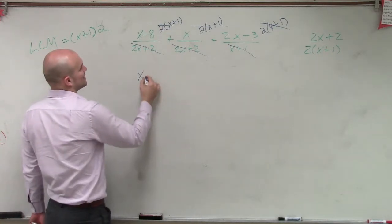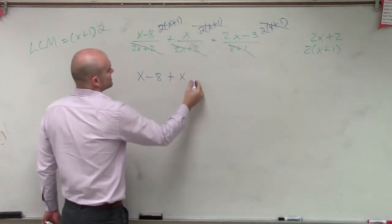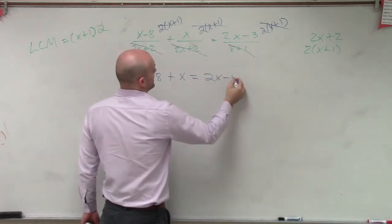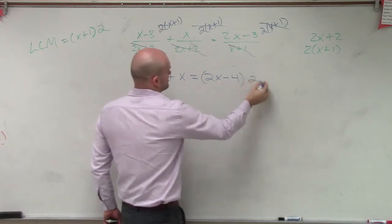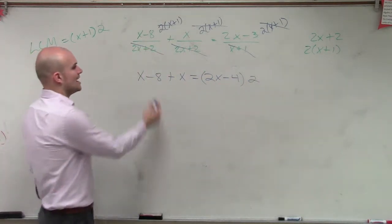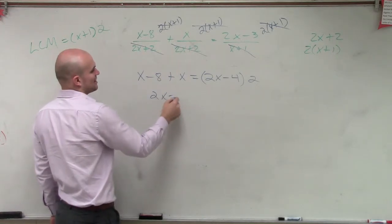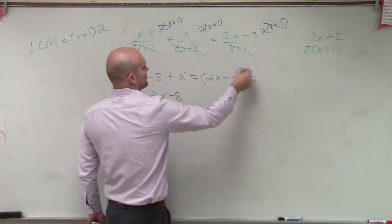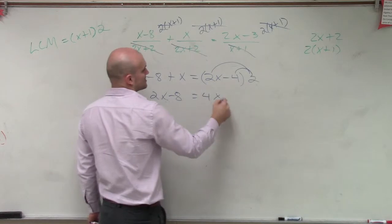So now I have x minus 8 plus x equals 2x minus 4 times 2. I can combine my terms here to get 2x minus 8, apply a distributive property here to get 4x minus 8.